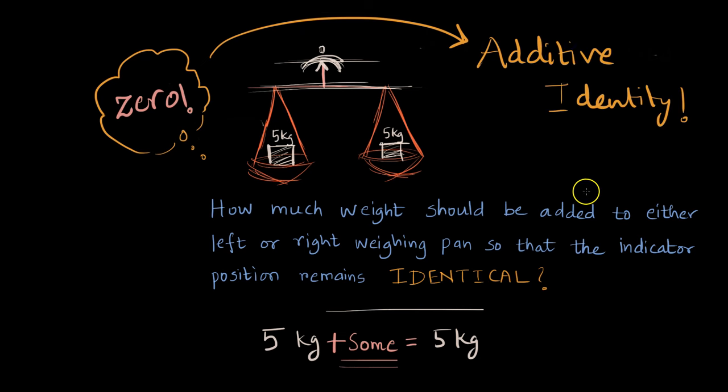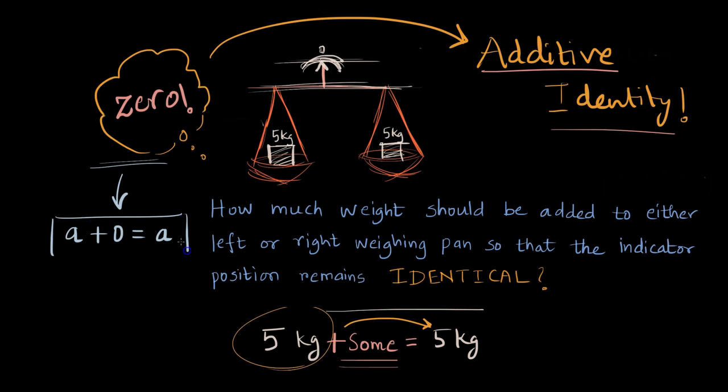So additive identity is a number which when added to any given number returns the same original number. So whenever somebody asks you what is the additive identity you will always say zero, which simply means if you have any number a and if you add zero to it will always get a.